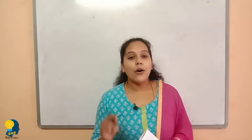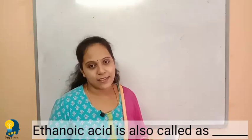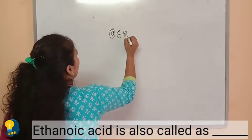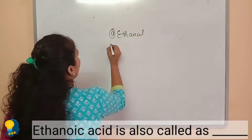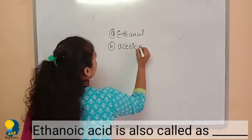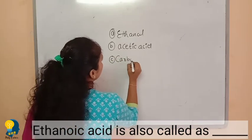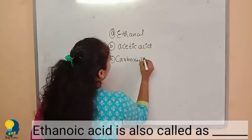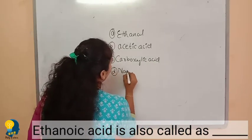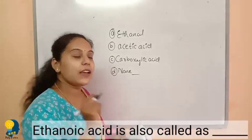The first question of video series 11 is: ethanoic acid is also called as? Option A is ethanol, option B is acetic acid, option C is carboxylic acid, and option D is none of the above. So we have to find out the other name for ethanoic acid.